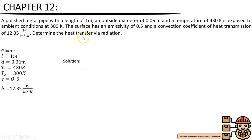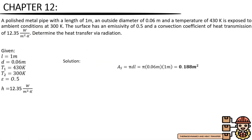Before we solve for the heat transfer via radiation, we need to identify first what is the surface area of the polished metal pipe. The surface area of the pipe per meter run is equals to pi times diameter times length. Since we have the values of diameter and length, which are 0.06 meter and 1 meter, multiplying these three values gives us 0.188 meter squared.